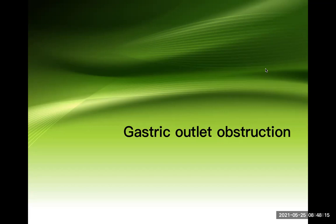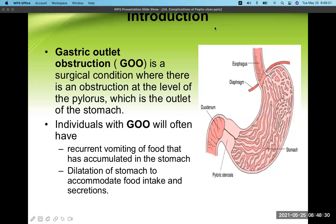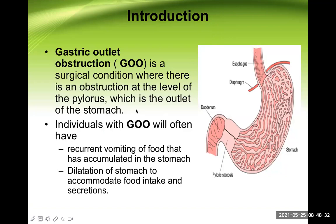With that background, let's enter into the topic for today: gastric outlet obstruction (GOO), also known as pyloric stenosis. Gastric outlet obstruction is a surgical condition where there is an obstruction at the level of the pylorus, and the pylorus is the outlet of the stomach — that's why it is known as outlet obstruction and also as pyloric stenosis.